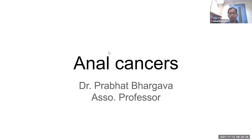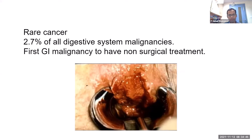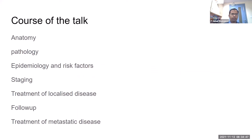Today's topic is anal cancer. It is a very rare cancer — only 2.7 percent of all digestive system malignancies. Medical oncology should be proud as it is the first GI malignancy to have a non-surgical treatment. I will discuss anatomy of the anal canal, pathology, epidemiology, risk factors, staging, and treatment of localized disease.